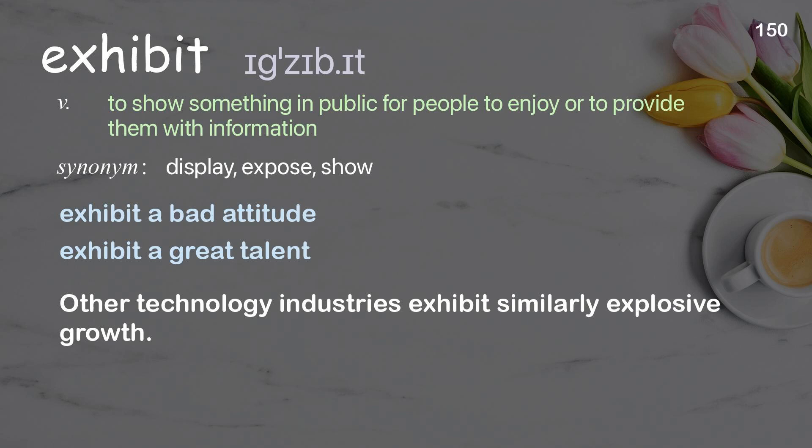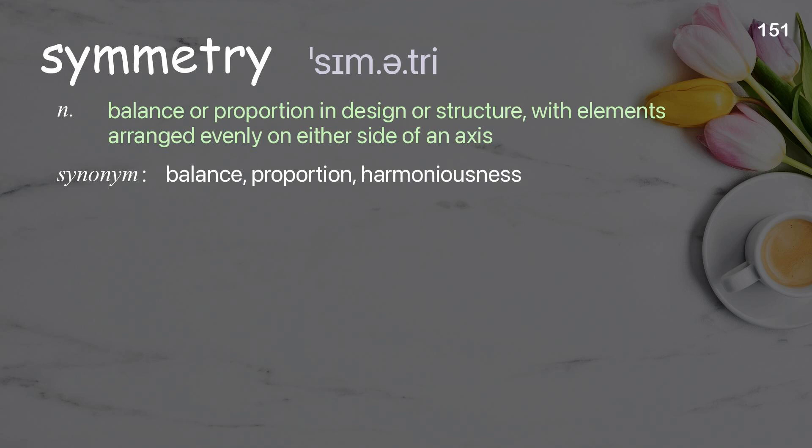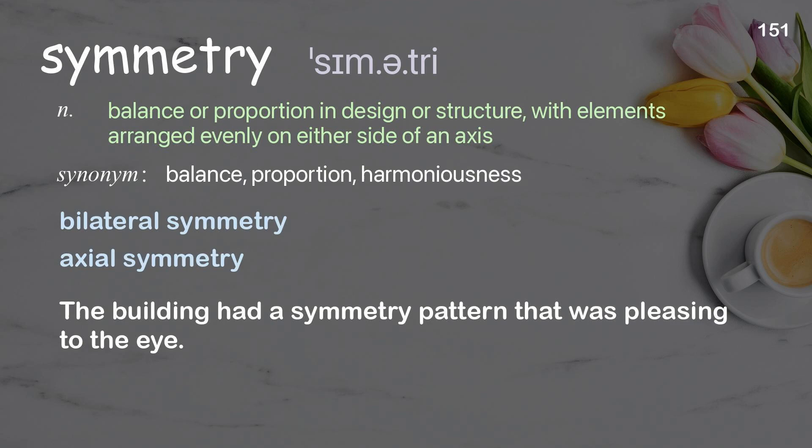Symmetry: balance or proportion in design or structure, with elements arranged evenly on either side of an axis. Examples: bilateral symmetry, axial symmetry. The building had a symmetry pattern that was pleasing to the eye.